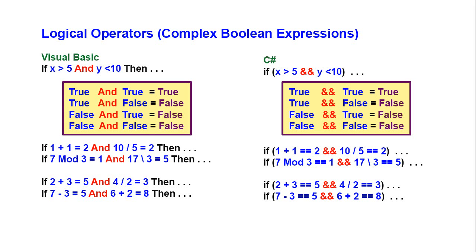Occasionally we may want to evaluate two boolean expressions together, and the way we do that is with logical operators. We're going to look at three logical operators: the AND, the OR, and the NOT.